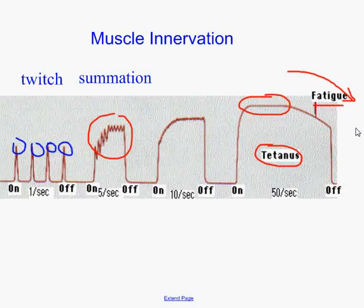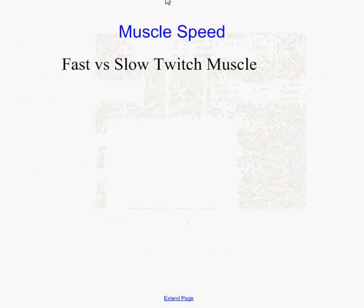Muscles are different from nerves. In nerves, an action potential is an all-or-nothing event. Not so in muscles — you have a lot of fibers, and not all of them have to fire at the same time, so we can get different strength muscle contractions. A single muscle fiber firing is called a twitch. If you get a lot of twitches going at the same time — many nerves firing off many muscle fibers — then you get an event called summation, meaning a more powerful contraction.